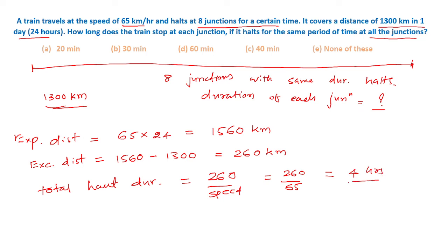This 4 hours is the total duration of halts. So the duration for one halt will be 4 divided by 8 hours, which is 0.5 hours, equivalent to 30 minutes.